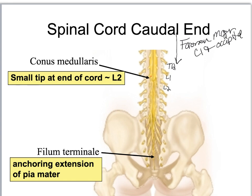Down at your lumbar vertebrae, you'll notice this section with a pointy tip that looks like a cone — we call it the conus medullaris. This is where the spinal cord ends in most people. It can vary depending on how tall or short you are; the average is around L1. Then you'll see all of these spinal nerves coming down and out.